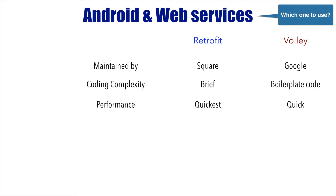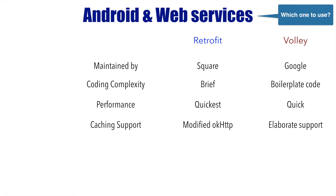Even though it looks like Retrofit is winning most of these points, let's look at the remaining aspects. The next criteria is caching support. You have seen how we have done it in Volley, and it has quite elaborate support for caching responses. But in the case of Retrofit, a modified OKHTTP has to be used to create caching support — it doesn't come natively out of the box as it does with Volley.